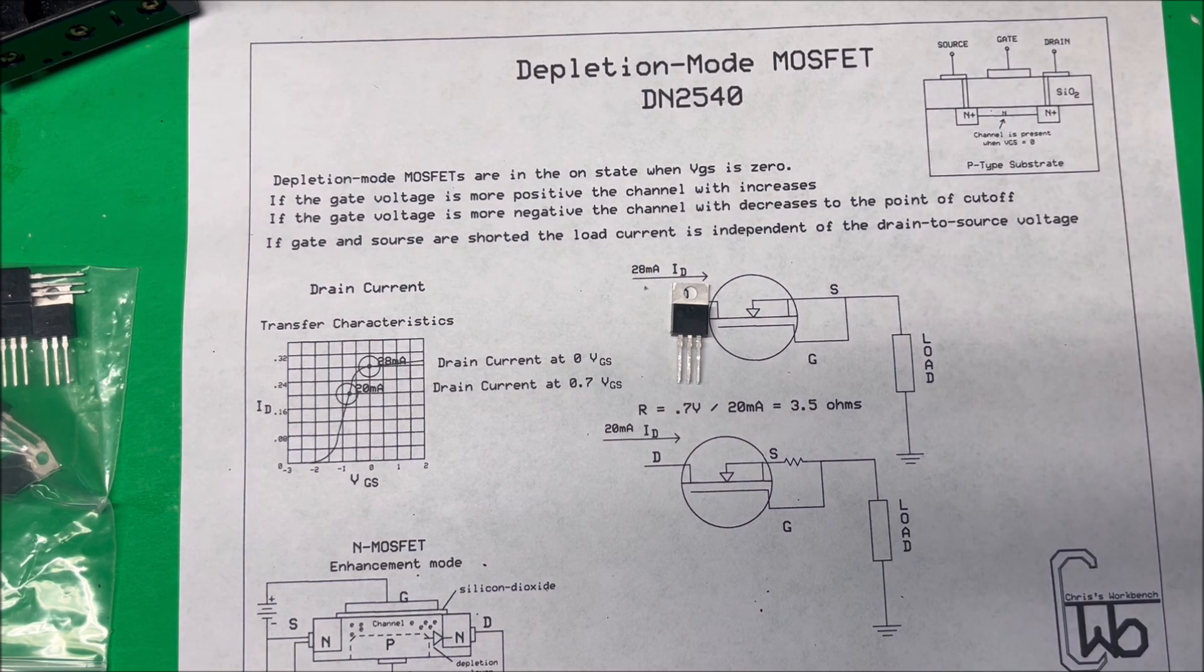Now if the gate to source is more positive, the channel will increase in size so you can pass more current. And if the gate voltage is more negative, the channel width will decrease to the point of cutoff. So if the gate and source are shorted, the load is independent of the...